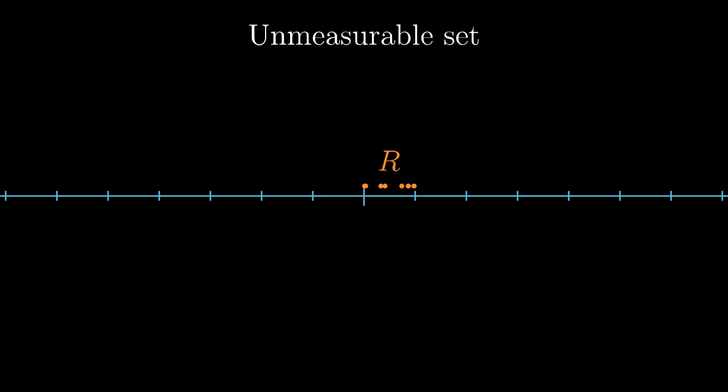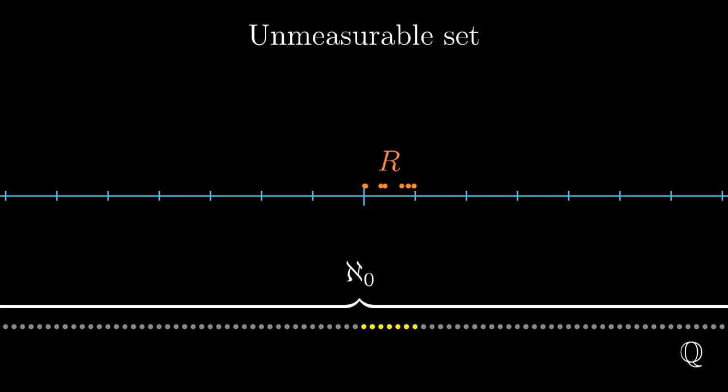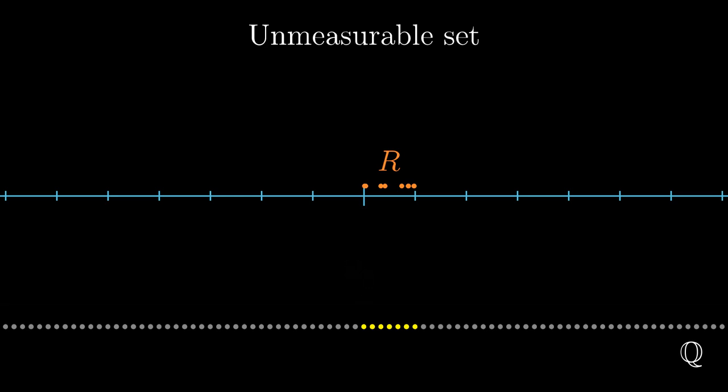To finish the measure paradox, we use a well-known fact about cardinalities. The cardinality of the rational numbers between 0 and 1 is aleph-0. It is the same as the cardinality of all the rational numbers. The paradox is now formed by aleph-0 of copies of r.